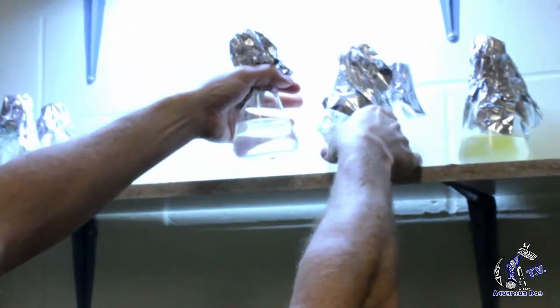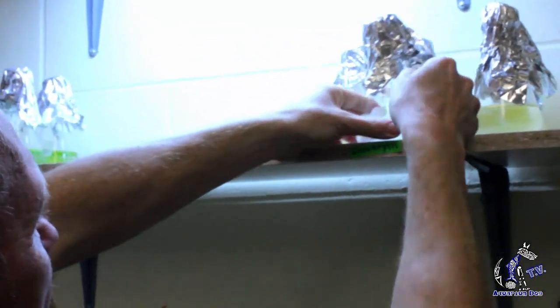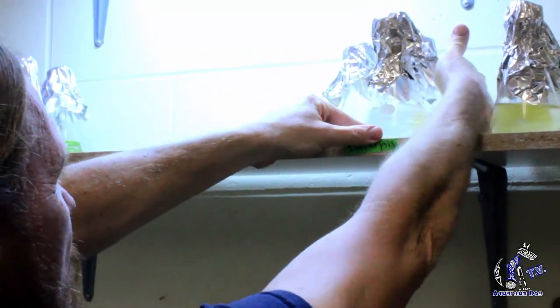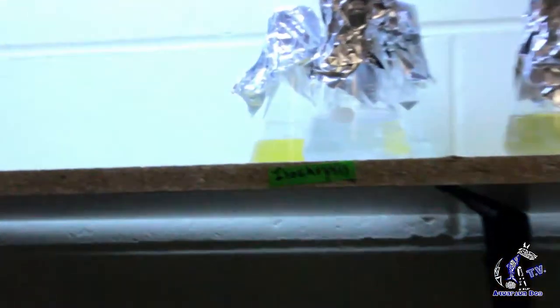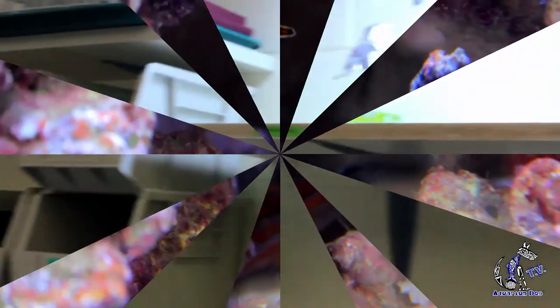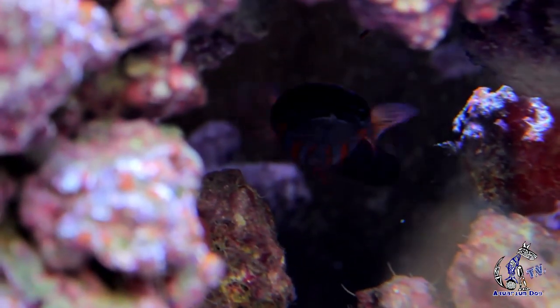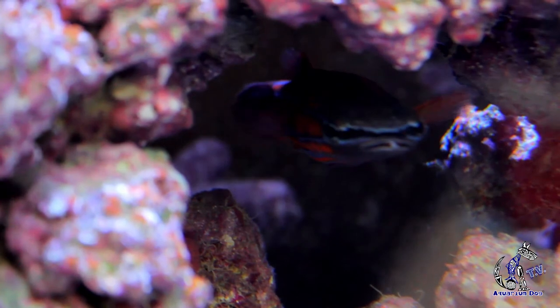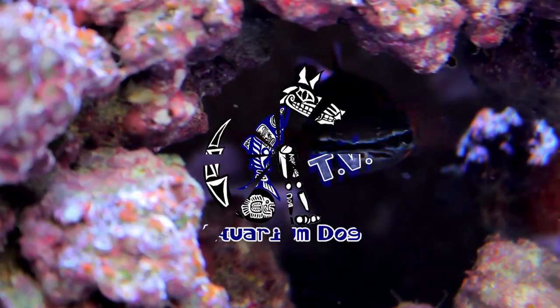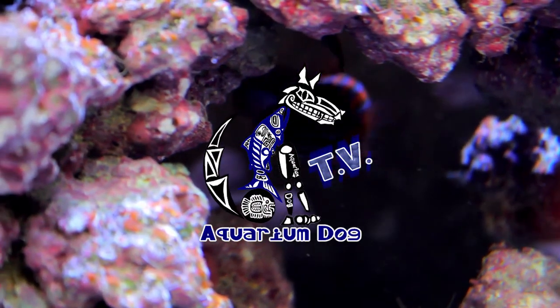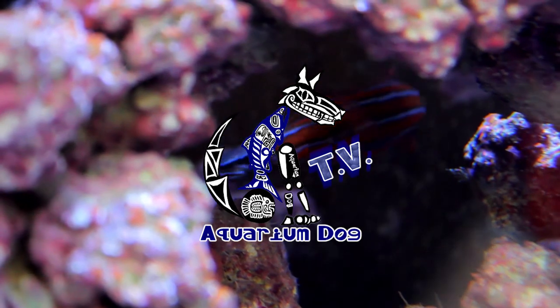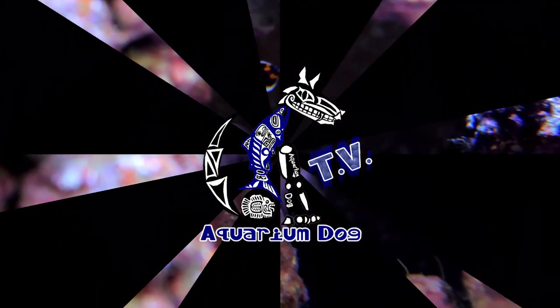So this one is Isochrysis. Next generation. This one is Chaetoceros. That's a diatom. And this one is Tetraselmis.